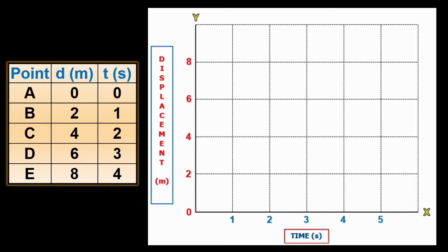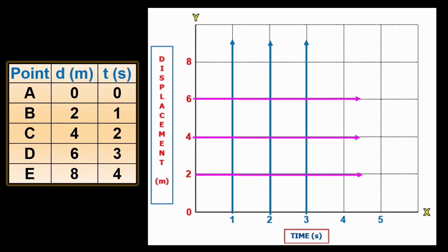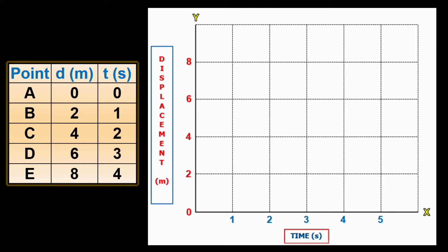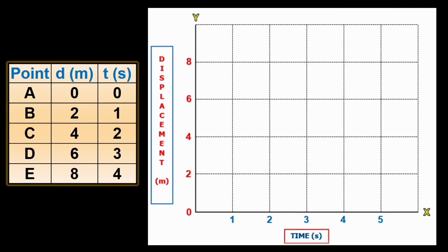Moreover, when you will be making your own Cartesian plane, make sure to draw the vertical and horizontal lines with equal spacing among each other and assign the values with equal intervals. In this case for displacement, the interval is by 2's, but you can have 3's, 4's, or 5's, and so on, while an interval of 1 for time. You can also use intervals like 2's, 3's, and so on, as long as it fits the range of the values in your data.